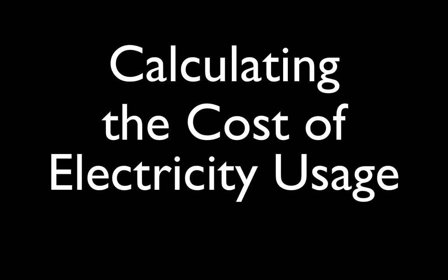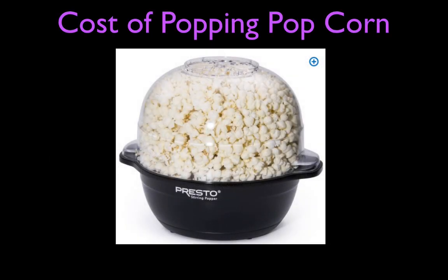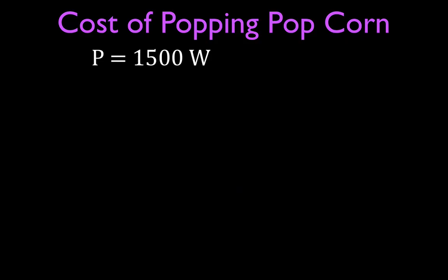In today's video, we are going to be going over calculating the cost of electricity usage. We're going to do that through a simple example where we're going to talk about how much it costs to pop popcorn with an electric popping machine like this one here we have in this picture. That electric popcorn popper has a power rating of 1500 watts, and let's say it takes 10 minutes to pop popcorn.